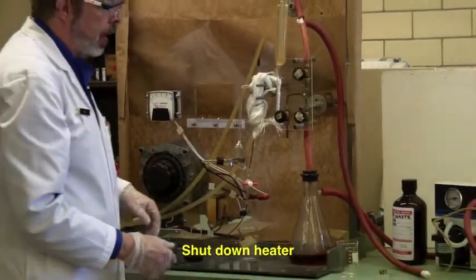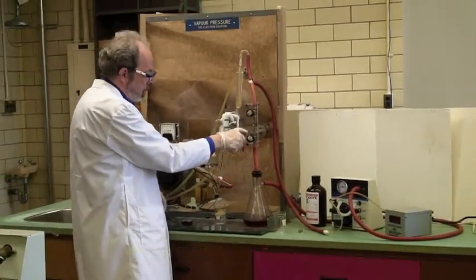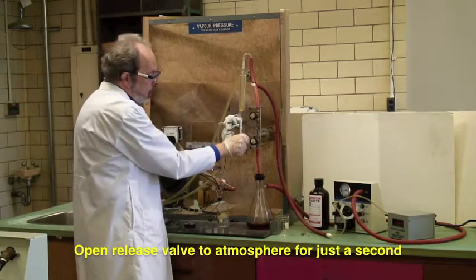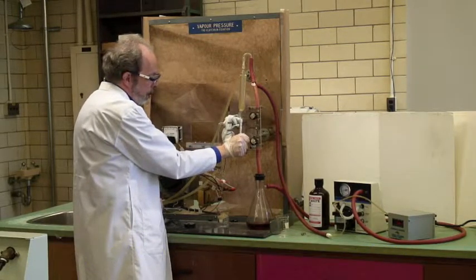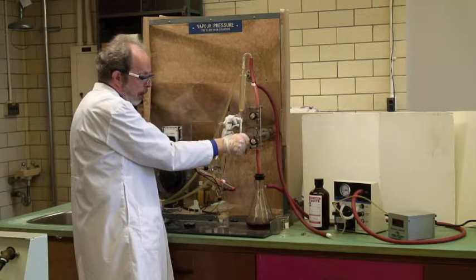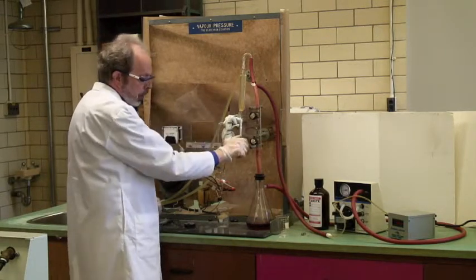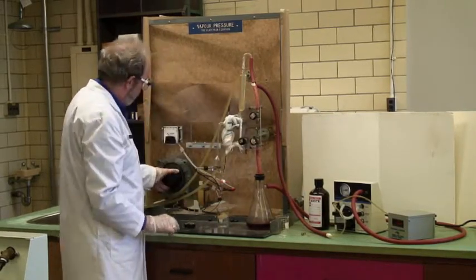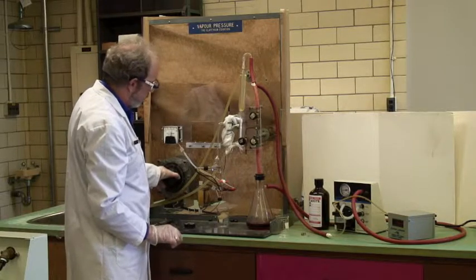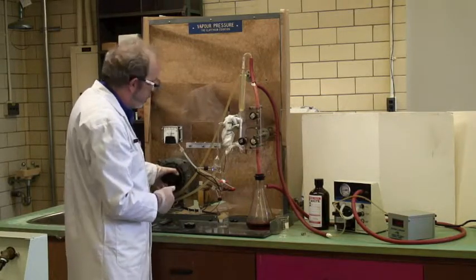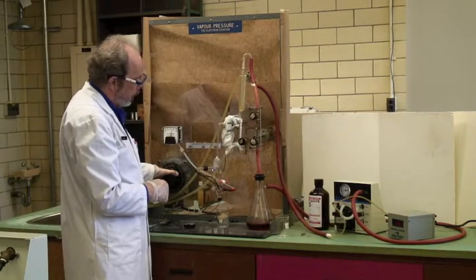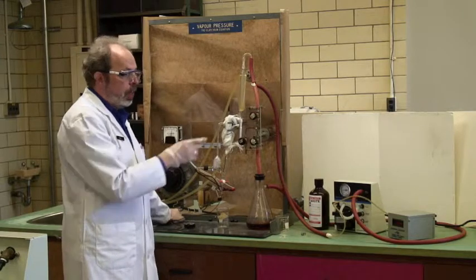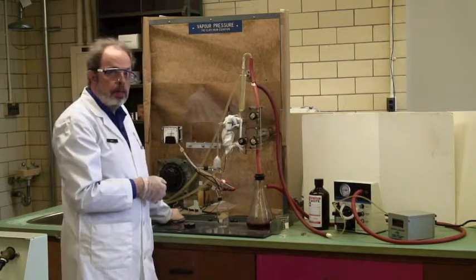At this point, we turn this down, and this is the release valve here, and open it righty tighty, lefty loosey, so counterclockwise for just a second. You'll see the pressure going up. I took it up to about 63, and then we turn the heat up again, and it'll start boiling a lot faster this time because I'm not taking it from room temperature, and again we'll measure the boiling point. And you continue to do this until your pressure gets up to atmospheric.